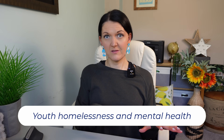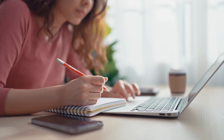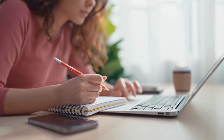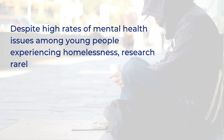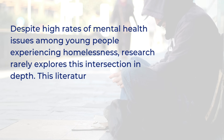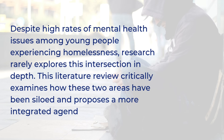For example, say your PhD is about youth homelessness and mental health. You notice that most studies look at them separately, or treat mental health as a side effect of homelessness rather than something central. You might write something like: 'Despite high rates of mental health issues among young people experiencing homelessness, research rarely explores this intersection in depth. This literature review critically examines how these two areas have been siloed and proposes a more integrated agenda.' That is a publishable literature review. You've got a gap, a critique, and a direction.